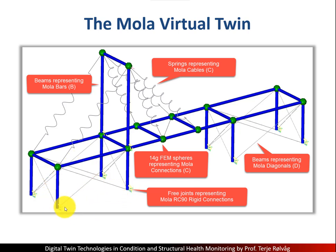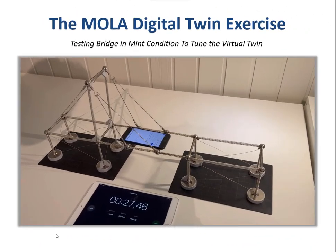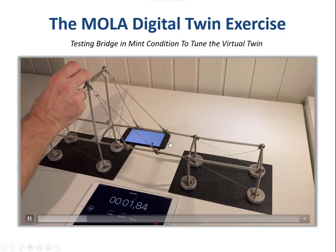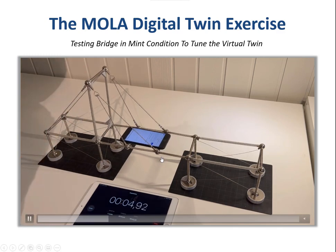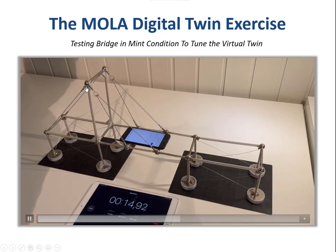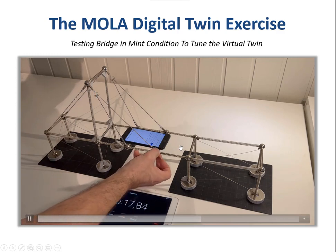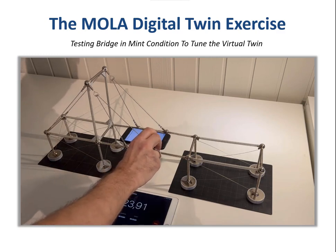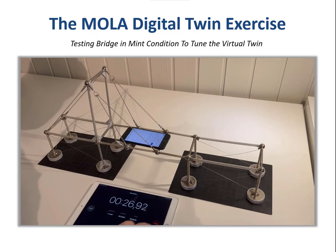At all free joints I have the option to introduce defects to the bridge. To tune and validate my digital twin model, I have to do some testing. I'm using my sensor log app and the smartphone to record accelerations in the X direction, which is across the bridge, in the longitudinal direction along the bridge, and in the vertical Z direction, while putting excitations on the bridge. The sensor log app stores the acceleration data in JSON files, which are later transferred to my FFT analysis.